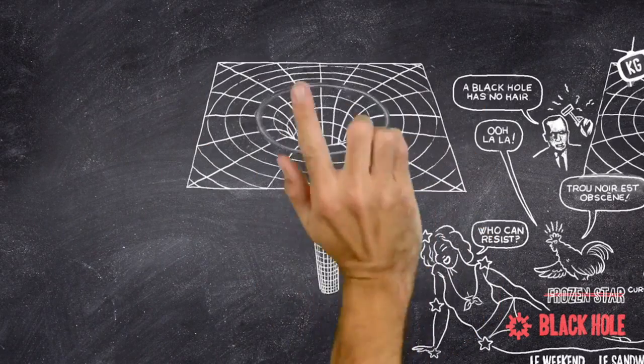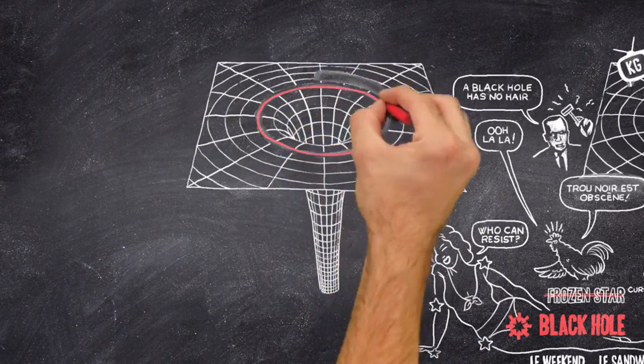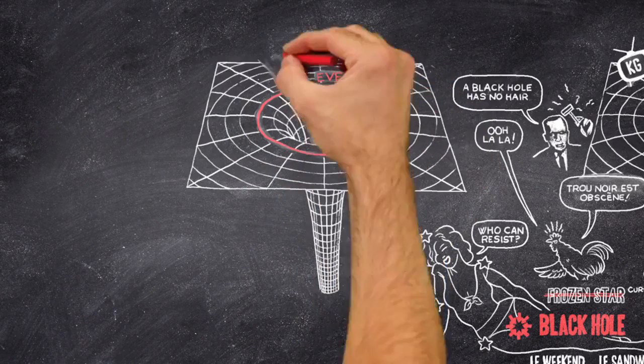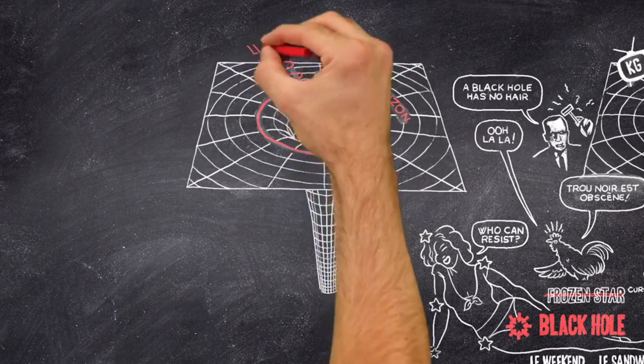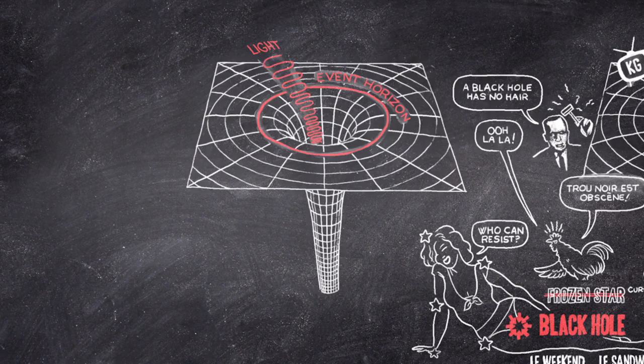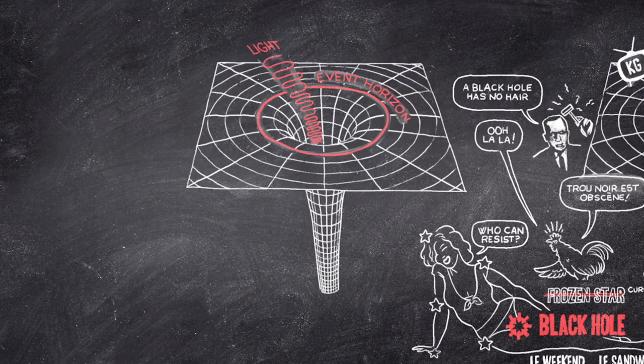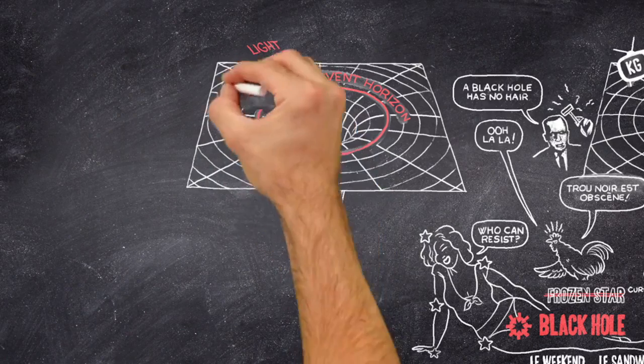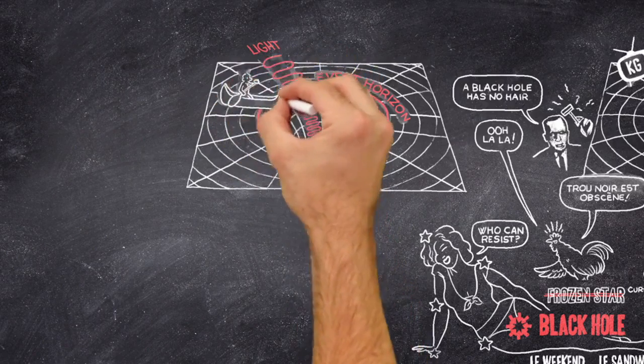A black hole has a boundary called the event horizon. It is where gravity is just strong enough to grab light back and prevent it escaping. Because nothing can travel faster than light, everything else will get dragged back also.